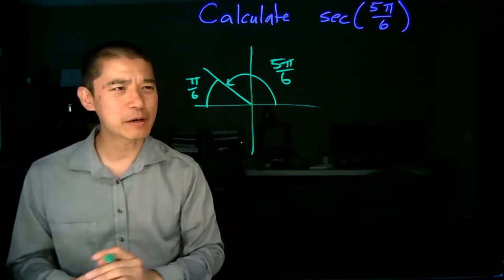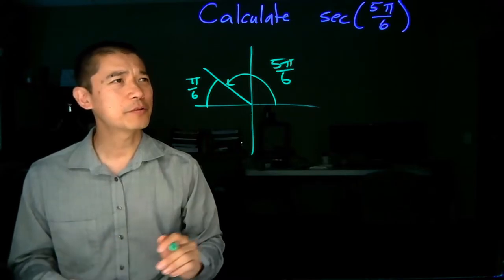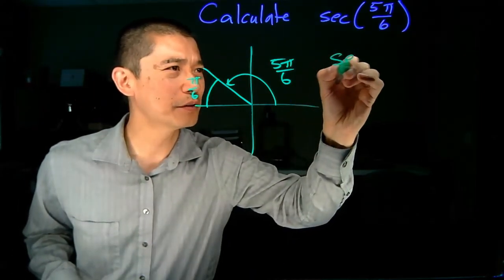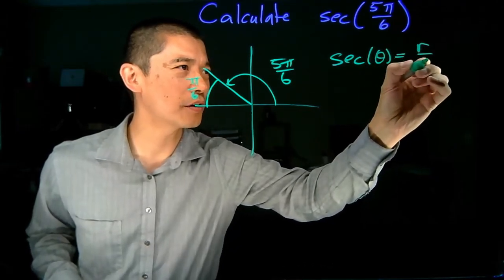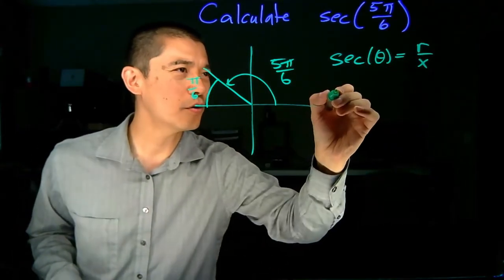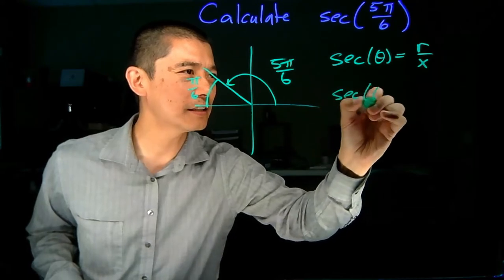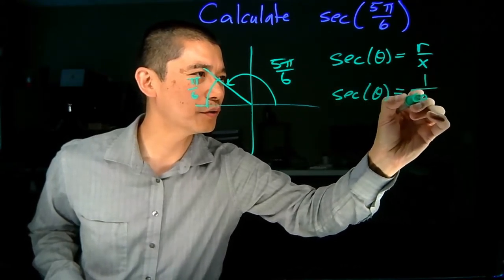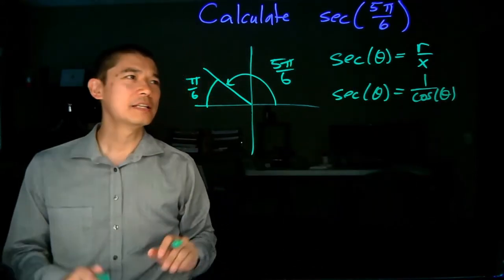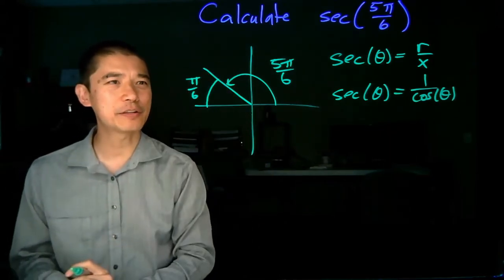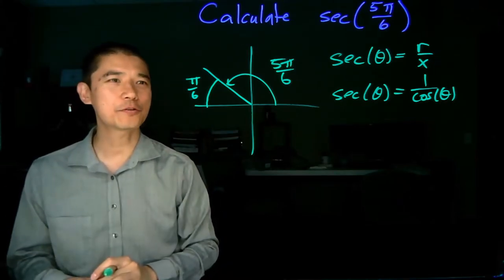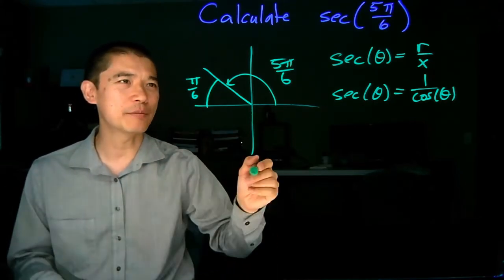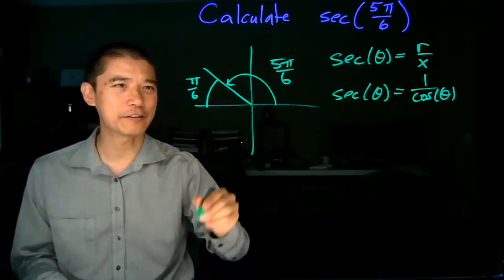Now we have to think about what is the value of the secant function. Well, for the secant function, we have either the formula, so secant of theta is equal to r over x, or we have secant theta is equal to 1 over cosine theta. Now, in both of these cases, we still need to figure out where the point on the unit circle is that corresponds to this angle. You can look that up on the unit circle picture, or the unit circle diagram, or we can just use reasoning and try to figure it out.